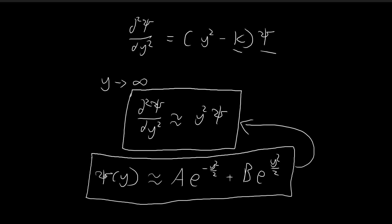If our xi is indeed going to look something like this as y tends towards larger numbers, you can expect this term to be 0. So b here should be equal to 0, because we want our xi to be normalizable. As you can see, e to the power of y-squared over 2 is hardly normalizable, so immediately we can just ignore this term.